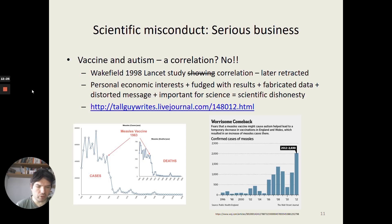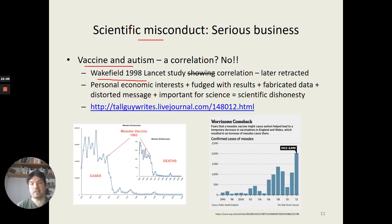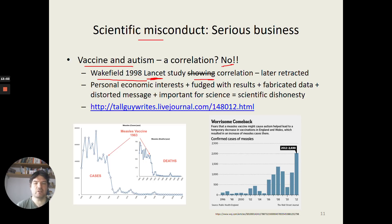To underscore how serious and fundamental a challenge this can be: one of the most famous cases of scientific misconduct is Andrew Wakefield's 1998 study on vaccines and autism, published in the prestigious journal The Lancet. It claimed to show a correlation between vaccines and autism — though it really wasn't the case. It used a very small dataset of around 13 children. The study was later retracted as false, and a large body of subsequent research has confirmed there is no correlation between vaccines and autism.